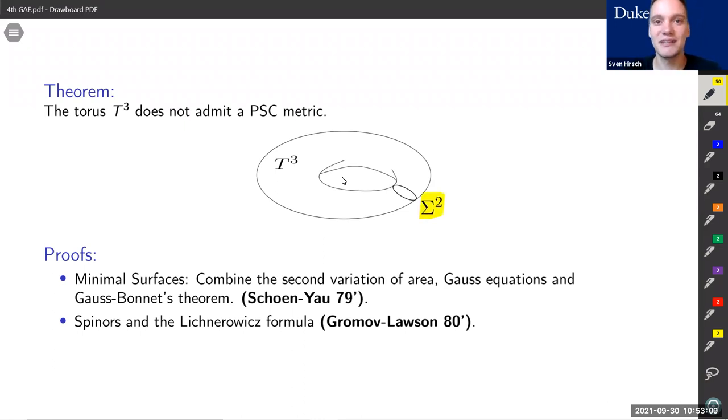Basically, the idea is you use the topology of your torus to get the existence of an area-minimizing surface Sigma. Because the surface Sigma is area-minimizing, you have a second variation formula, and combining this variation formula with the Gauss equations and Gauss-Bonnet's theorem leads to a contradiction in view of having a PSC metric on a torus.